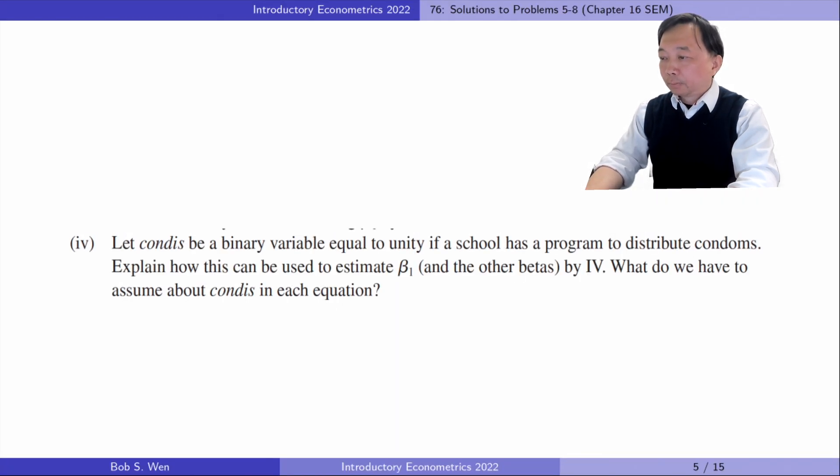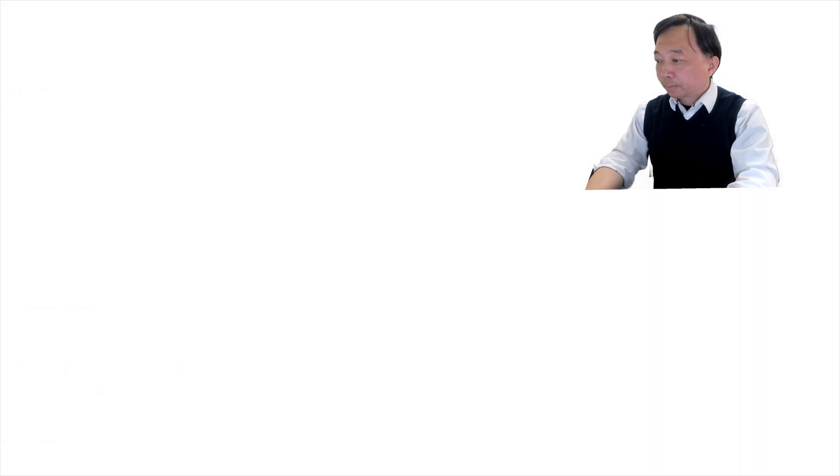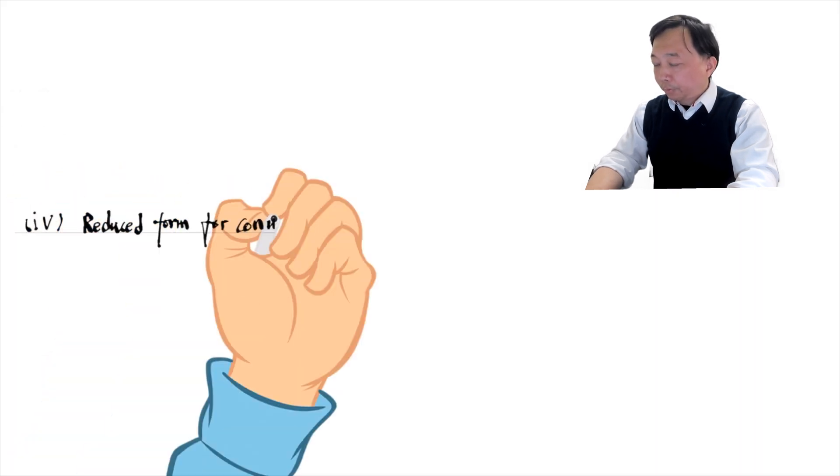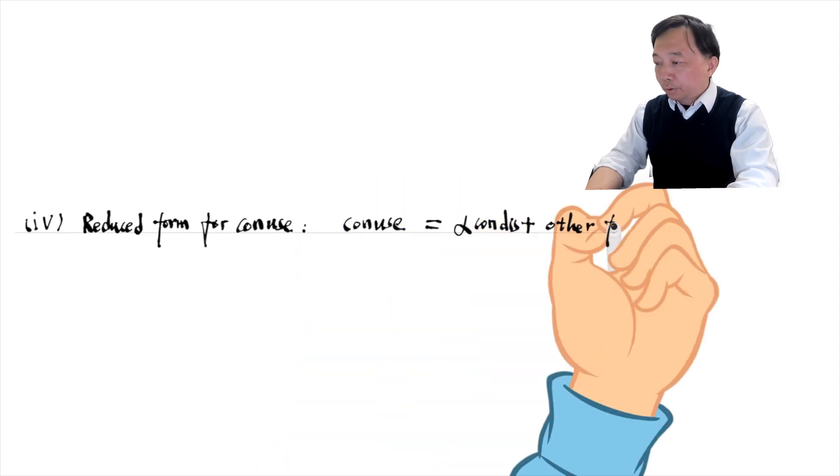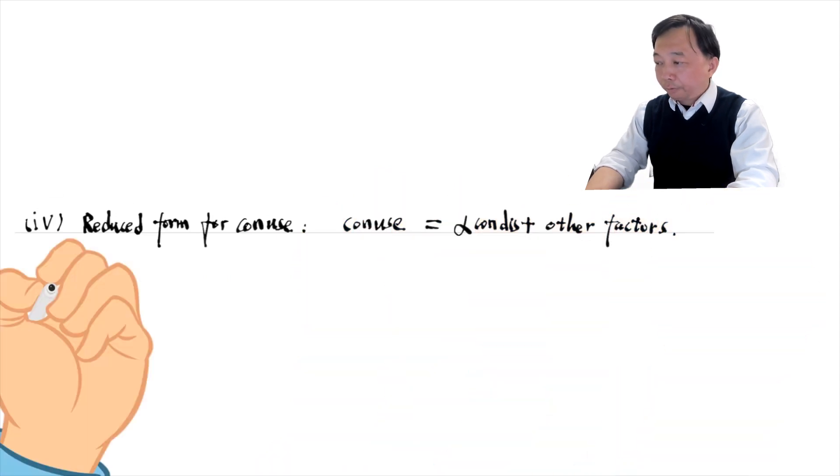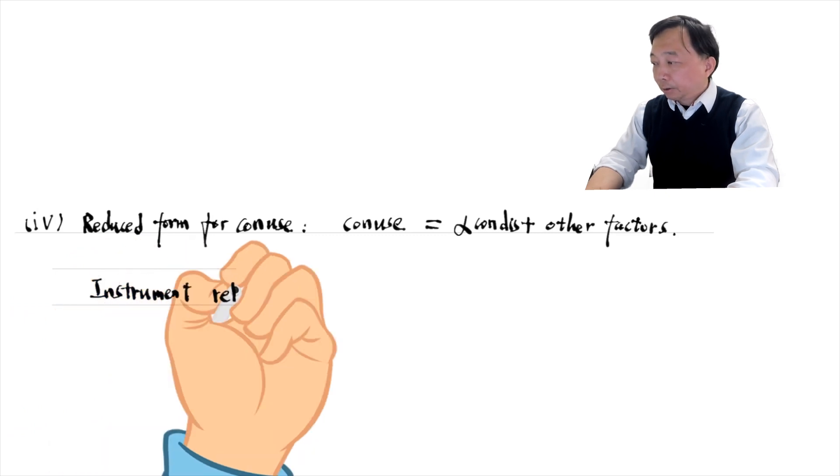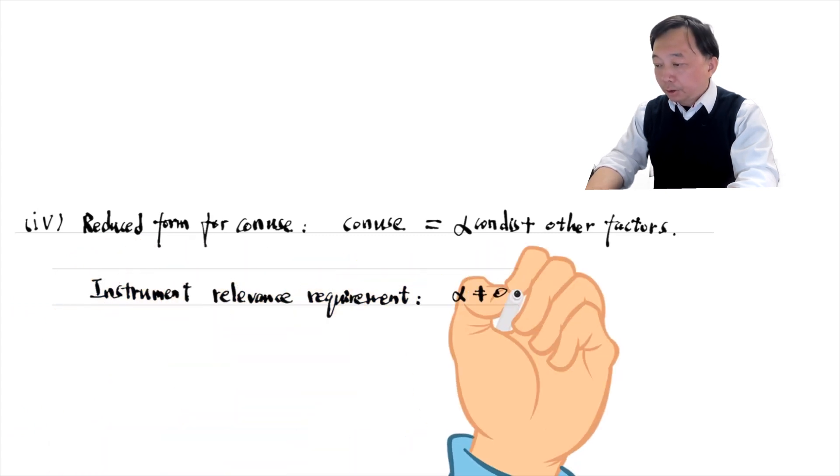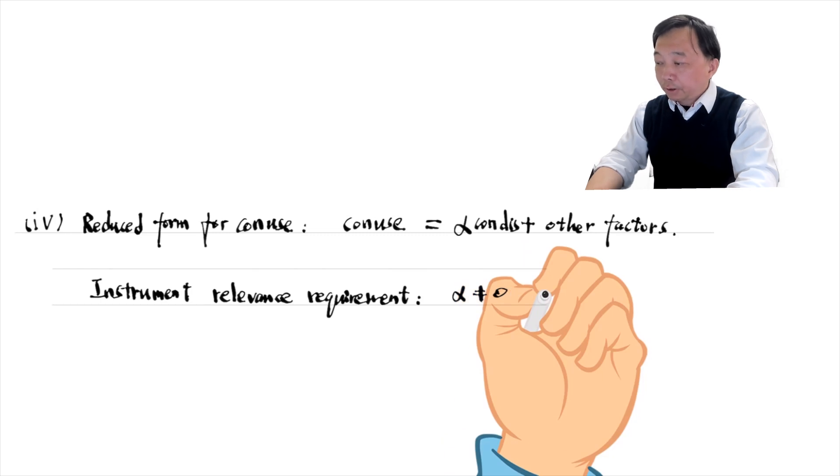In part four, let condom distribution be a binary variable equal to unity if a school has a program to distribute condoms. Explain how this can be used to estimate beta one and the other betas by IV. What do we have to assume about condom distribution in each equation? In the reduced form equation for condom usage, the instrument relevance requirement is that alpha should not be zero. That is, the distribution has a partial effect on the usage. It can be verified in the first stage regression.